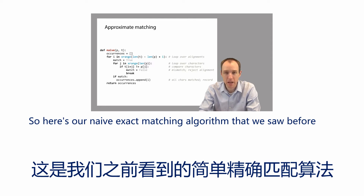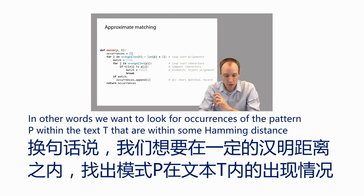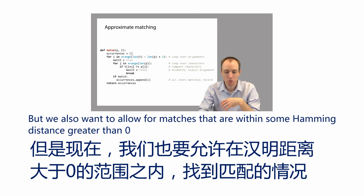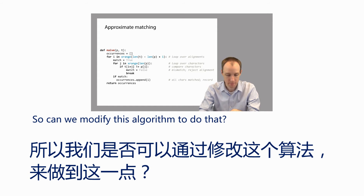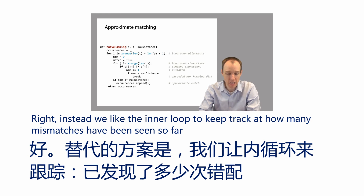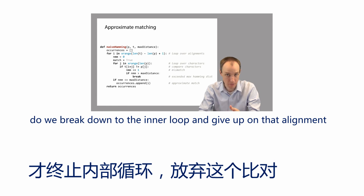Here's our naive exact matching algorithm that we saw before. If we wanted to adapt it to allow mismatches — that is, to look for occurrences of pattern P within text T that are within some Hamming distance — we just need a small modification. Instead of immediately giving up when we encounter a single mismatch, the inner loop keeps track of how many mismatches have been seen so far, and only breaks out when we exceed the maximum number of mismatches allowed.